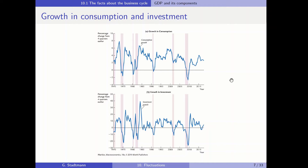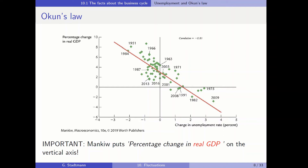We can also use a scatter diagram to look at the relationship between the percentage change in real GDP and the change in the unemployment rate. This relationship is called Okun's Law, and what is very special is that there is a negative relationship: when the growth rate of real GDP is pretty high, the unemployment rate will decrease because the change in the unemployment rate is negative.